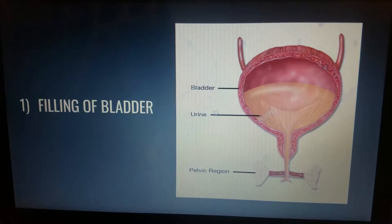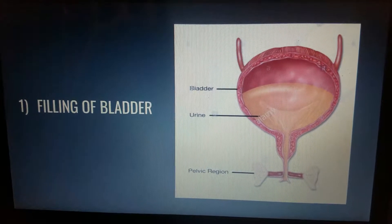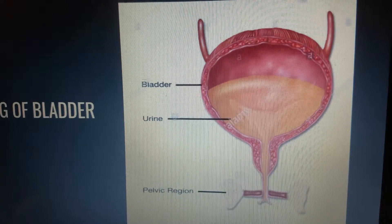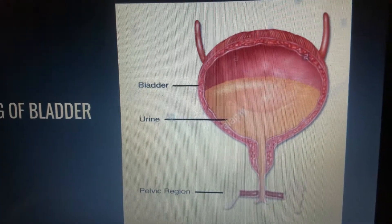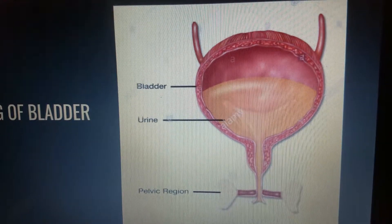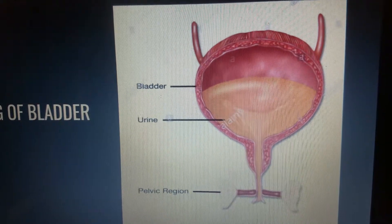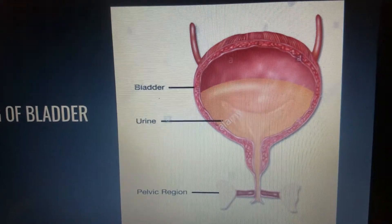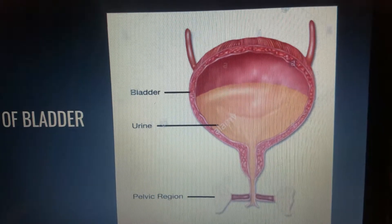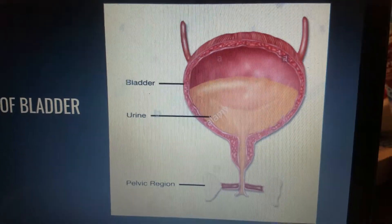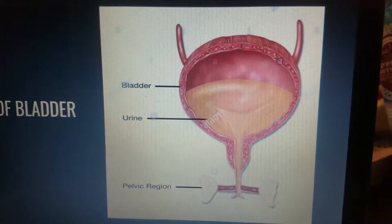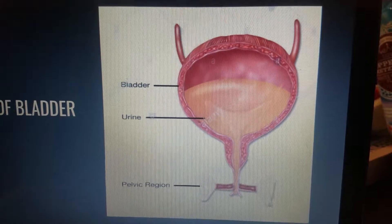The first step in this process is the filling of the bladder. When the bladder becomes filled with about 200 milliliters of fluid or more, the stretch receptors become excited in the bladder wall. Afferent signals also transmit to the spinal cord.